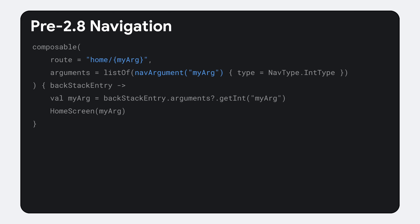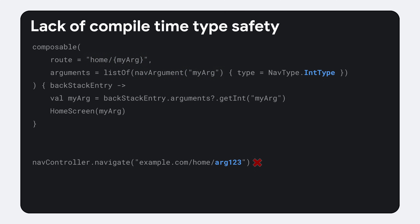However, you'll notice that routes and arguments are declared in strings, and this causes one issue: lack of compile time type safety. For example, when you navigate, you may accidentally pass in alphanumerics for an integer argument, and you may not realize that until runtime when navigation crashes. So how can navigation and Kotlin DSL provide type safety?